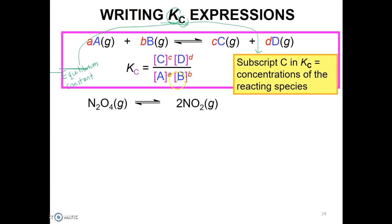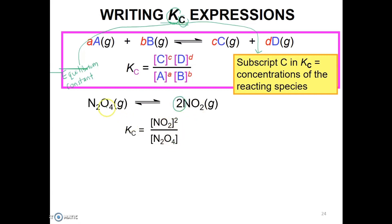For example, N2O4 gas decomposes to form 2NO2 gas. The Kc expression will be the concentration of NO2 raised to the power of 2 (since the mole coefficient is 2) over the concentration of N2O4, which is the reactant species.